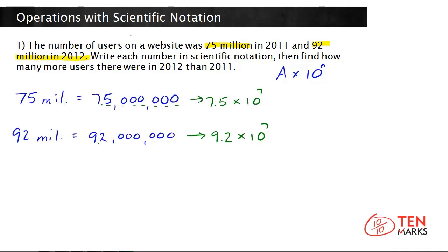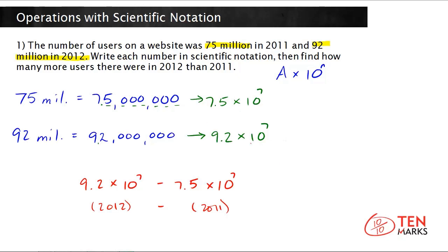The first number is the 2012 figure, and we subtract the 2011 number to find the difference. Notice that you have a factor multiplied by a power of 10 in both cases, and the powers of 10 are the same. So you can take advantage of the distributive property to help you solve — factor out the power of 10. This becomes 10 to the 7 times (9.2 minus 7.5). Subtracting gives 1.7, still multiplied by the power of 10.